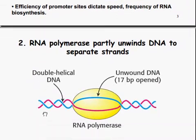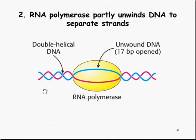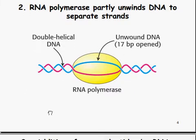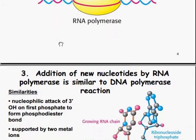RNA polymerase partly unwinds the DNA to separate the strands, unwound around 17 base pairs or so.